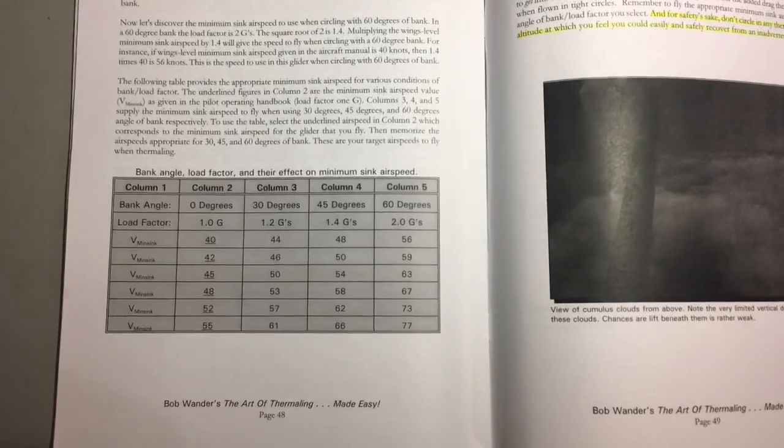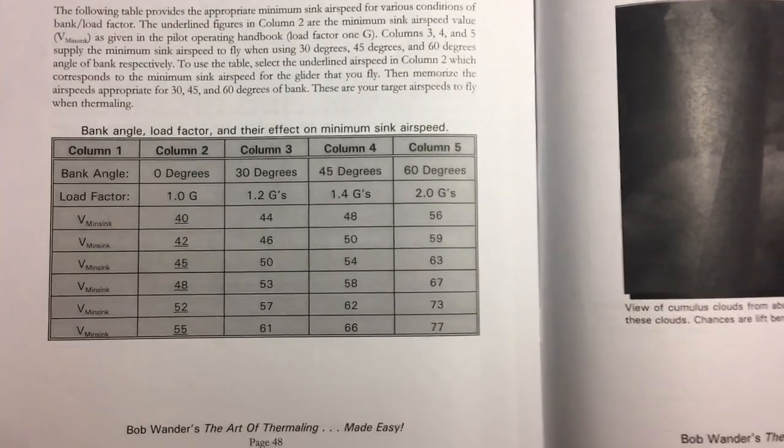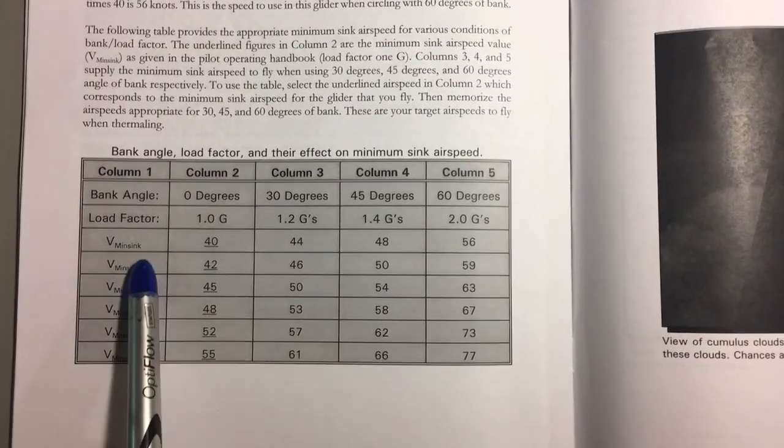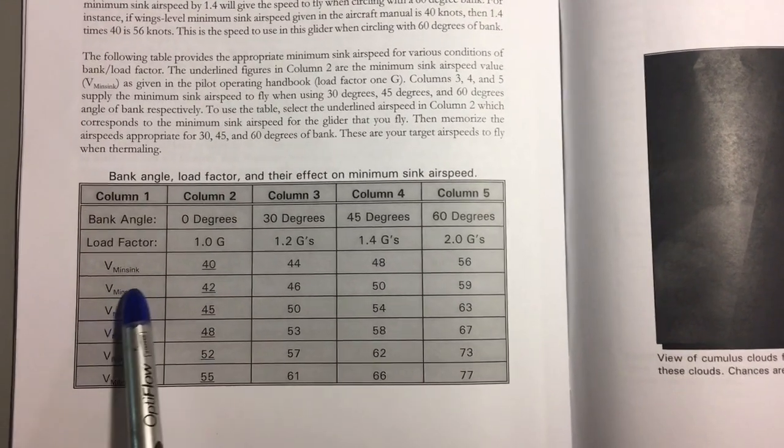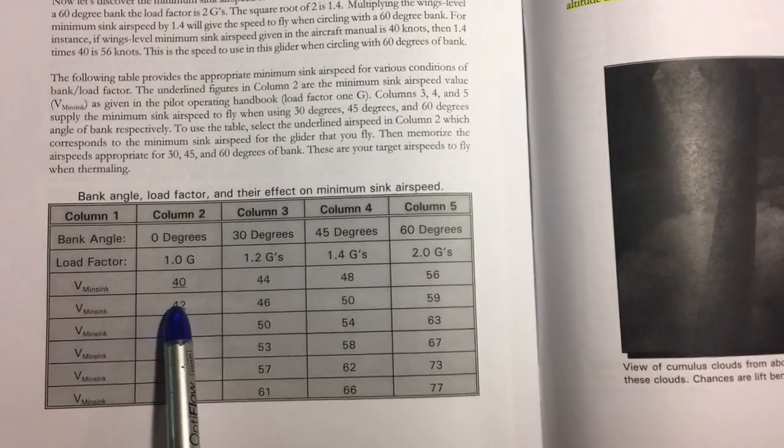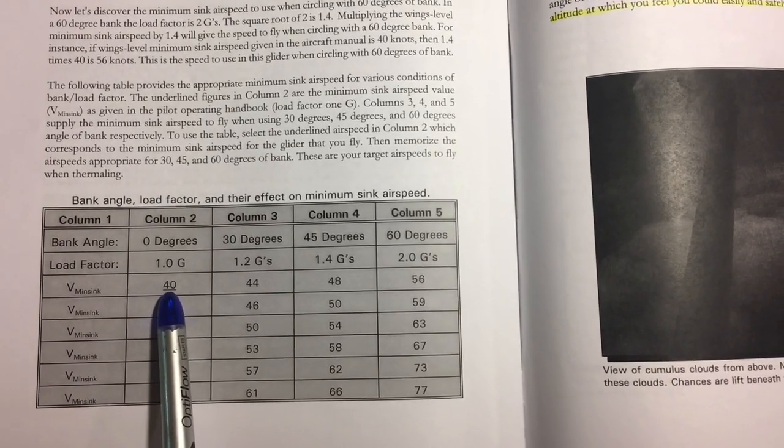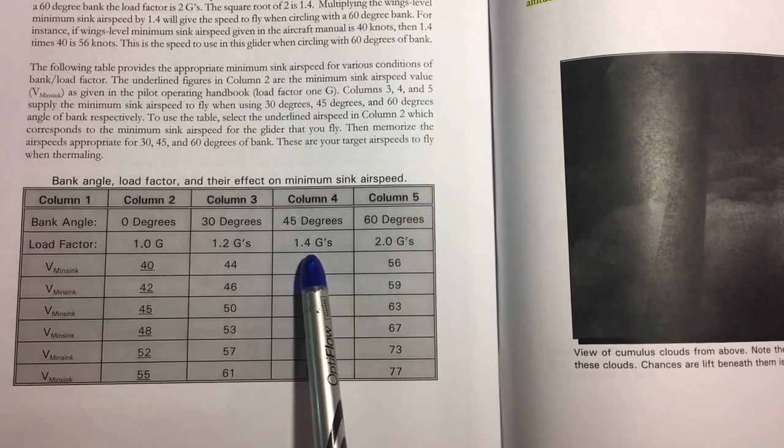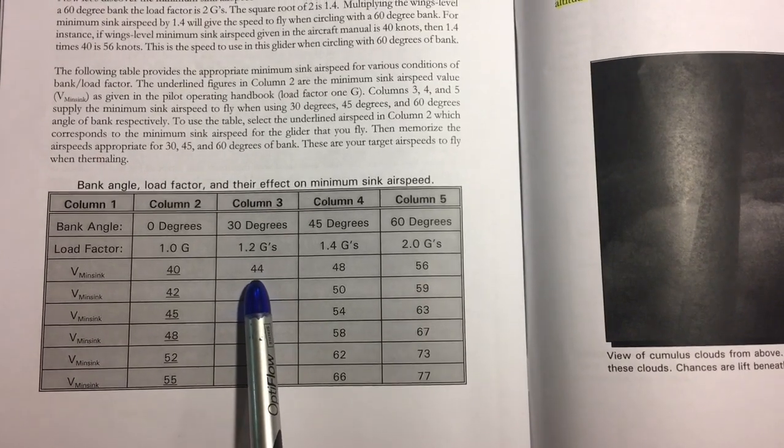This is the same calculation we just did but with a different application. We've got the minimum sink airspeed for zero degree bank angle in this case for different types of aircraft. Let's look at the case of the first aircraft where the minimum sink is 40 knots. At zero degree bank angle minimum sink is 40 knots, but you can see at 45 degrees we've got 1.4 G's, that's the same 1.4 we saw earlier, and the new minimum sink airspeed is 48 knots, and at 30 degrees it's 44 knots.